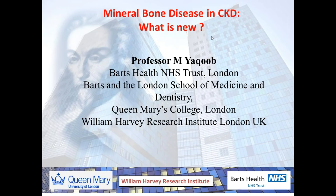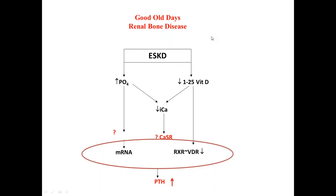Before I go to what is new, I would like to go back to my own days when I was a trainee — what I still describe as the good old days. At that time, renal bone disease was very simple. The whole thing started when the patient came for dialysis. Before that stage, we did not have the concept of chronic kidney disease. We used to call it chronic renal failure, and bone disease was the last thing on our mind because the whole focus was to prevent those patients going on to dialysis in the first place. We started thinking about bones only when they started dialysis.